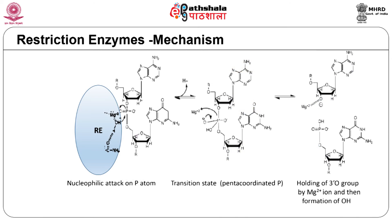Restriction enzymes bind to double-stranded DNA at the specific recognition sequence and cut the phosphodiester bond between two nucleotides on each strand. The mechanism involves a nucleophilic attack by OH on the phosphorus in the phosphodiester bond, making the phosphorus carry an extra negative charge in a transition state, which is then passed to a magnesium ion to stabilize the 3-prime O, and finally to a proton to form OH.